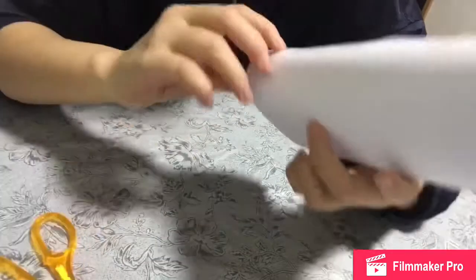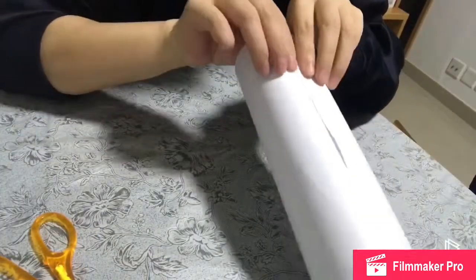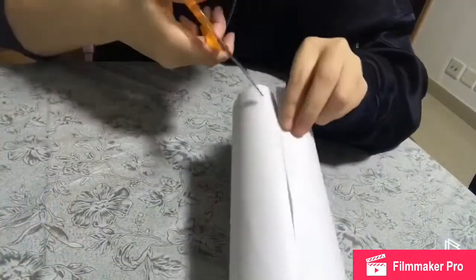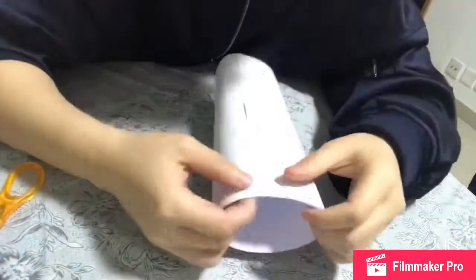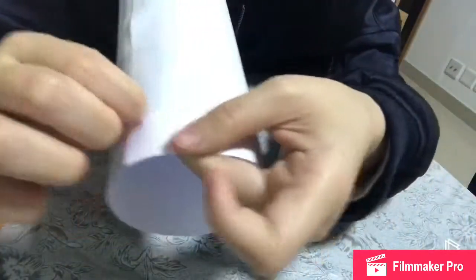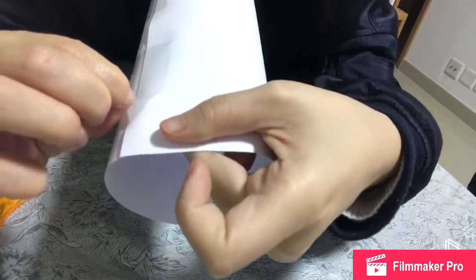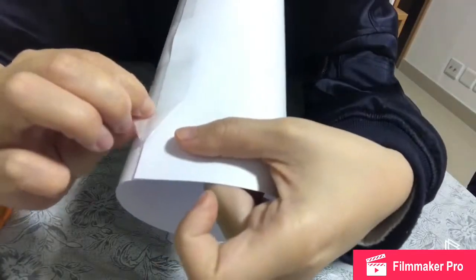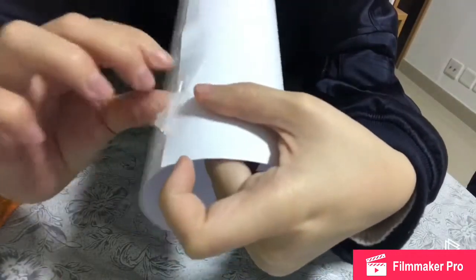However, the paper was no more straight and flat. There were wrinkles when it was shaped as a cylinder. Also on the removed tapes, some tiny white fibers were removed from the paper.